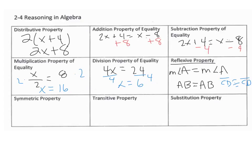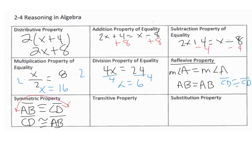The symmetric property is when you have the exact same statement except the left-hand side and right-hand side are flipped. So if AB is congruent to CD, then segment CD is congruent to segment AB. See how the right-hand side and the left-hand side just flipped? That's called the symmetric property.